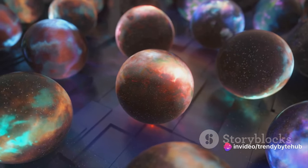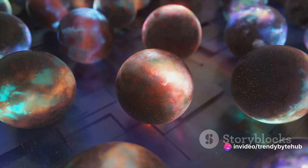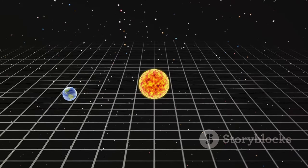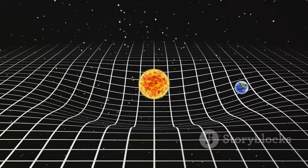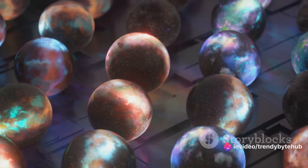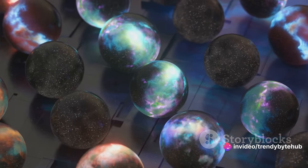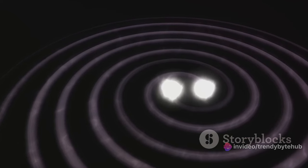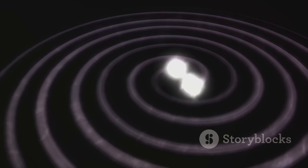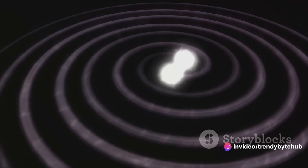The second part of Einstein's theory, general relativity, takes this a step further. It describes how massive objects cause a distortion in space-time, which we perceive as gravity. To visualize this, imagine a trampoline with a bowling ball in the middle. The ball creates a dip, a curve in the trampoline's surface. Now, if we roll a marble along the trampoline, it will move towards the bowling ball, not in a straight line, but along the curve. This is how gravity works in general relativity.